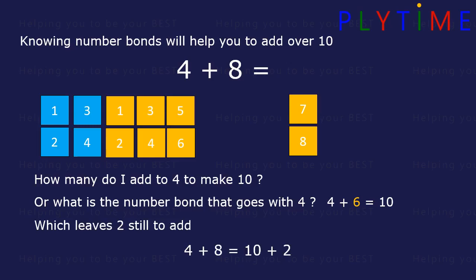So 4 add 8 is the same as 10 add 2, which is 12. 4 and 8 is 12.